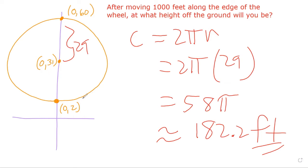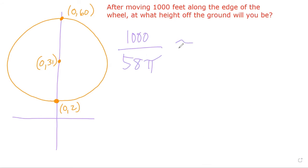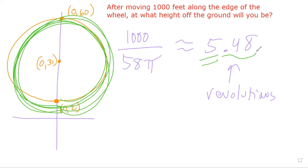So every time you go around this wheel, you've moved around 182.2 feet, but we're trying to move a thousand feet. So we have to divide. Let's divide a thousand by this number here. This is about 5.48. Now this number represents the number of revolutions. We are going to go around the world not once, not two or three or four or five, but we're going to do five full spins and then a partial spin.